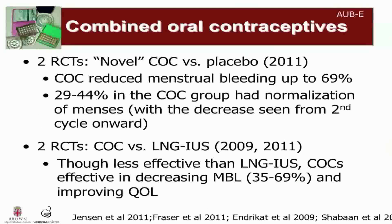Four studies evaluating the effectiveness of combined oral contraceptives as treatment for heavy menstrual bleeding have been published since 2009. Two randomized control trials looked at a novel combined oral contraceptive using a different dosing regimen and a unique estrogen compound. These studies found that combined oral contraceptives reduced menstrual bleeding by up to 69 percent, and that 29 to 44 percent of women in the combined oral contraceptive group compared to placebo had normalization of menses. Two other RCTs compared combined oral contraceptives to the levonorgestrel intrauterine system — though they were less effective, they were effective at decreasing menstrual blood loss and improving quality of life. One of these studies used a low-dose combined oral contraceptive pill.